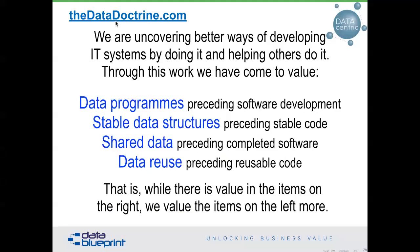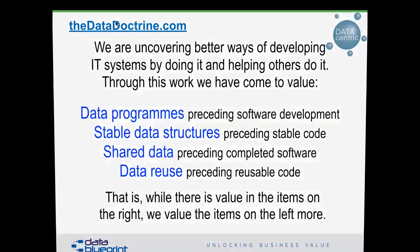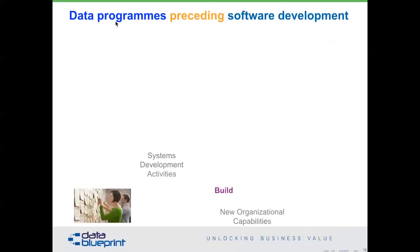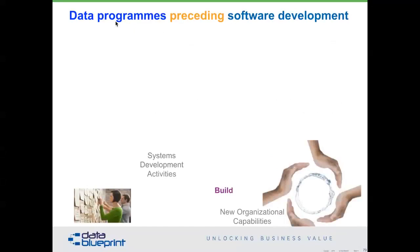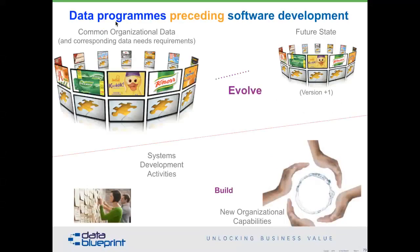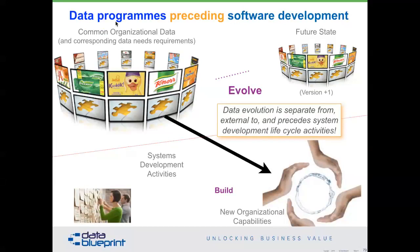It's not that there's no value to the things on the right, but we value the things on the left more — which is exactly what the Agile Manifesto says. What's really happening is that there's a mismatch — a cadence mismatch, or impedance — because IT is very good at building new stuff, but data evolves over time. It's a much different rhythm, and it needs to be separated from and made external to systems development lifecycle activities.